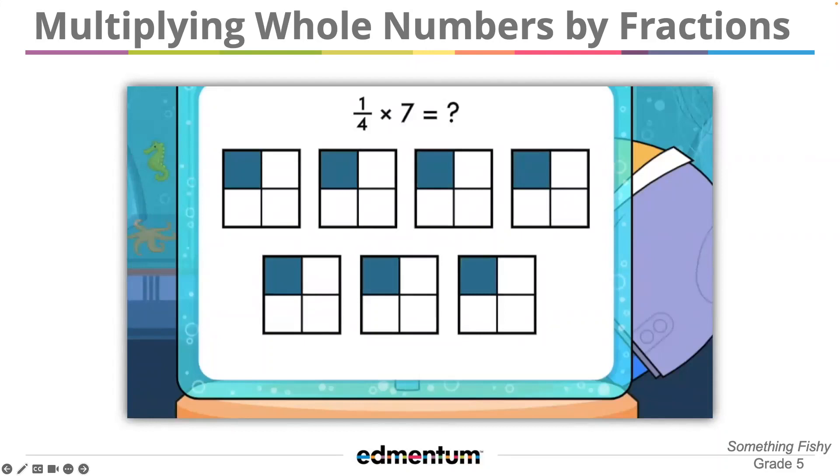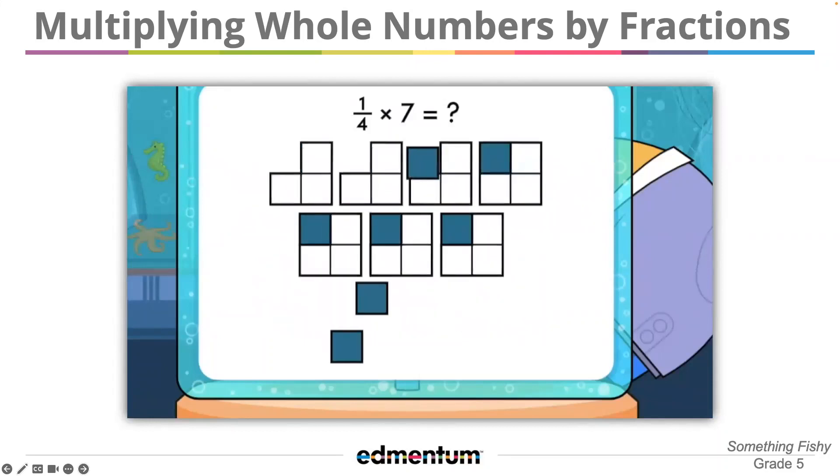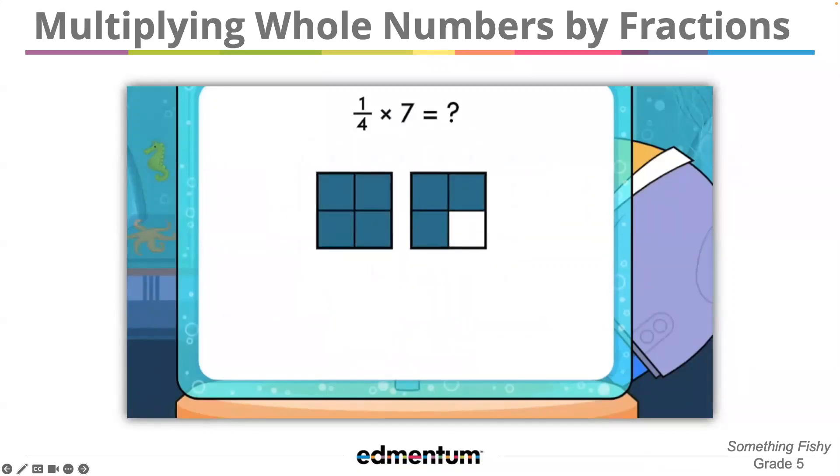I see it! Now, when we combine the shaded portions from each bag of food, we can see how many bags of food we should feed the fish today. Nice work! One-fourth of seven is seven-fourths. Four-fourths is a whole, so seven-fourths is the same as one-and-three-fourths. We need to feed the fish one-and-three-fourths bags of fish food.